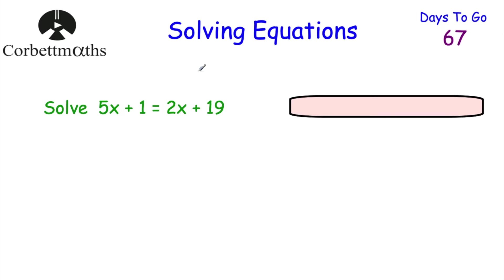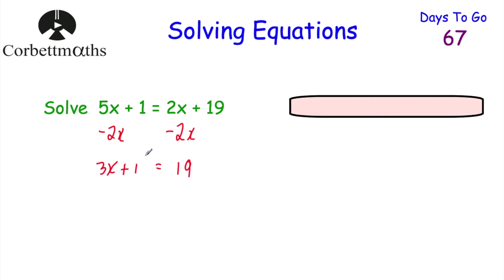Now we're going to look at an equation with letters on both sides. Feel free to press pause and have a go. When solving equations with letters on both sides, I tend to get rid of the lowest number of letters. We've got 5x's and 2x's, so I'll get rid of the 2x's by subtracting 2x from both sides. On the left-hand side: 5x minus 2x leaves 3x plus 1. On the right-hand side: 2x minus 2x is 0, leaving plus 19. So 3x plus 1 equals 19. Take away 1 from both sides: 3x equals 18. Divide by 3: x equals 6.